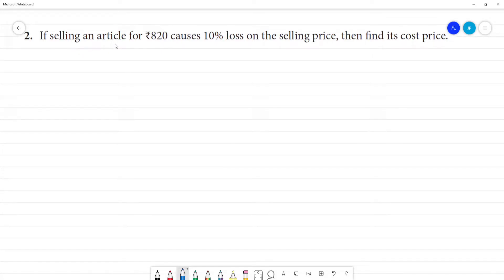If selling an article for Rs.820 causes 10% loss on selling price, then find its cost price. When selling price of an article, selling price of an article is Rs.820.